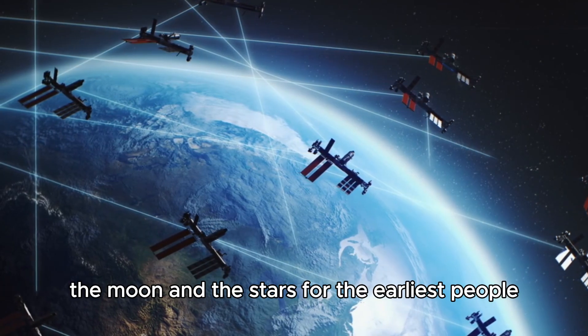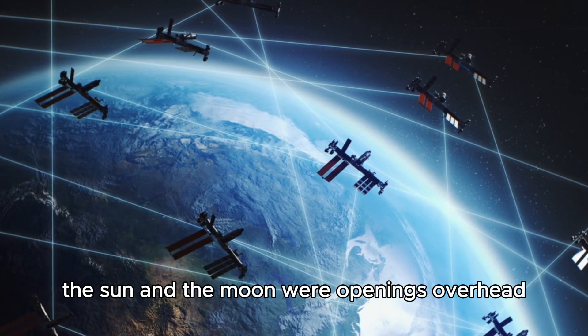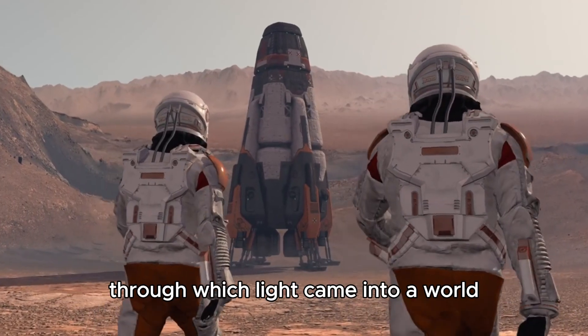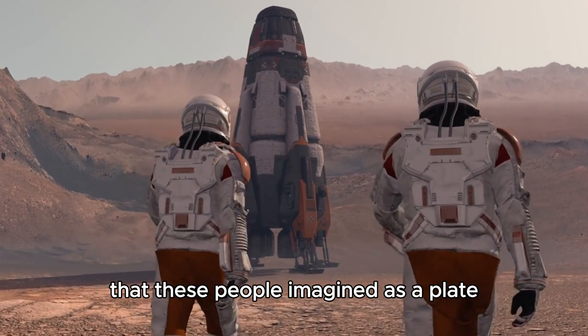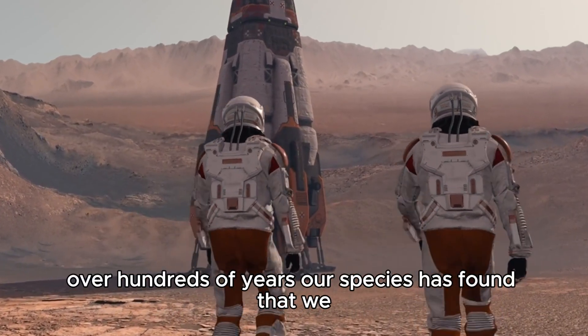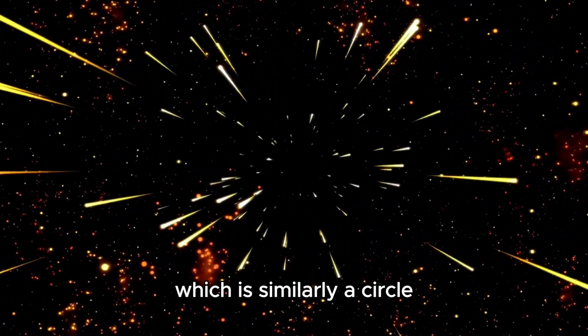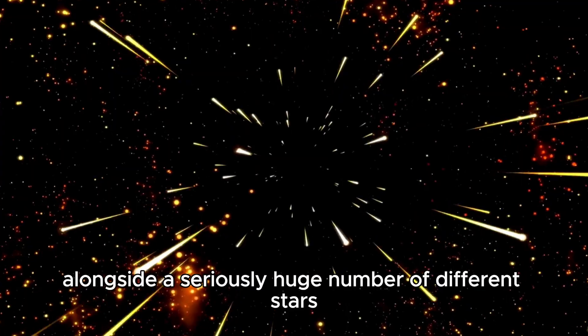For the earliest people, the sun and the moon were openings overhead through which light came into a world that these people imagined as a disc. Over hundreds of years, our species has found that we live on a ball that turns and twists around a star.